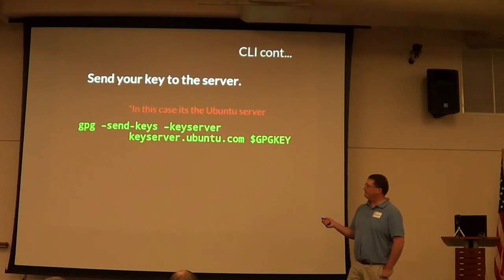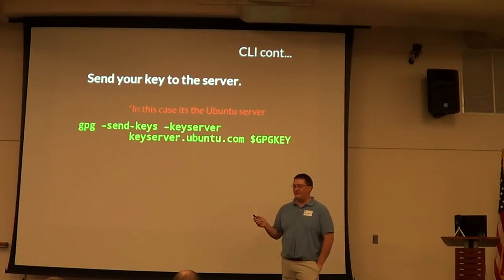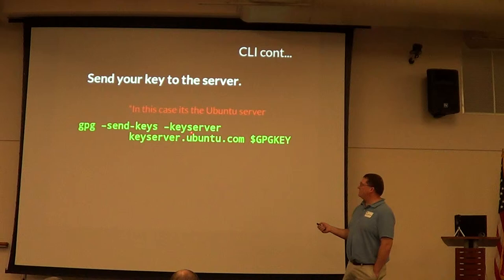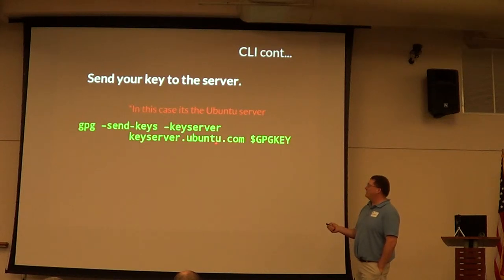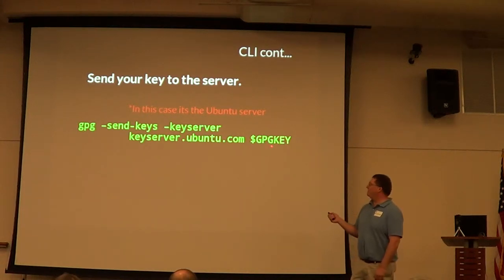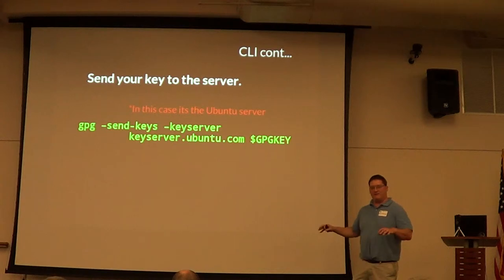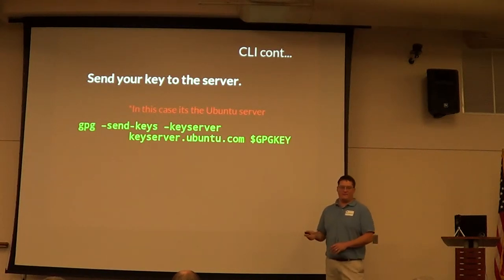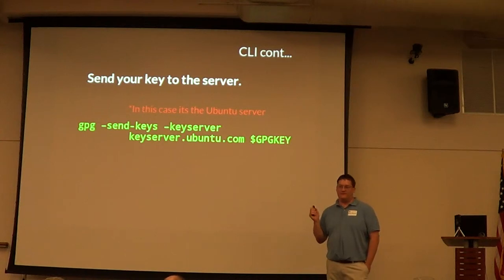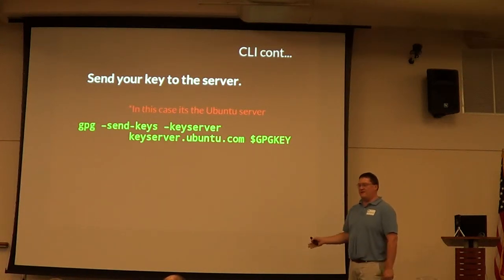I'm going to get more into GUI stuff, so if you're not a command line person, just hold on a bit. On the command line, if you want to send the key to the key servers, this would be the command you use. It's saying using GPG, send the keys to the key server — in this case it's Ubuntu — and then you're using that key ID from the last slide. Because you can have multiple keys in your keyring, you want this to be your default key. It also makes it handy for scripting.